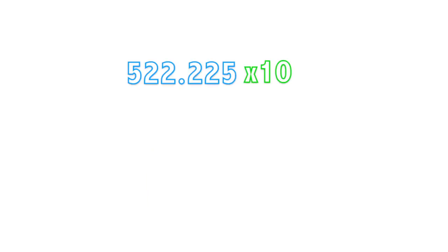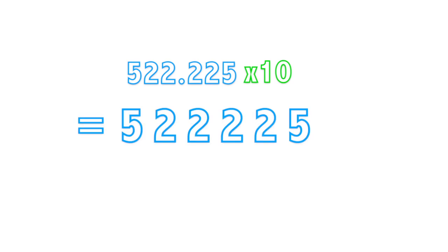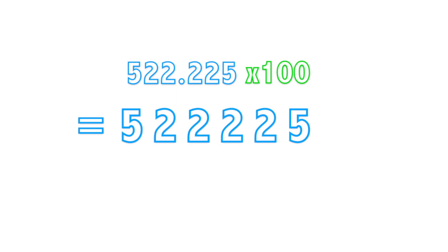With decimal numbers, an easy way to shift the digits to a different number place is by moving the decimal point. If you want to shift all the digits to the left one number place, then you can just move the decimal point to the right one number place. If you want to shift all the digits to the left two number places, then move the decimal point to the right two number places. If you want to shift the digits to the right, as in the case of dividing by 100, then you can just move the decimal point to the left twice.